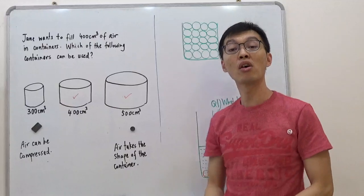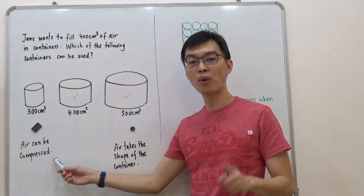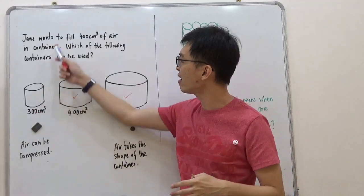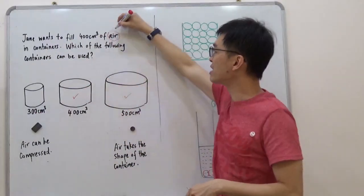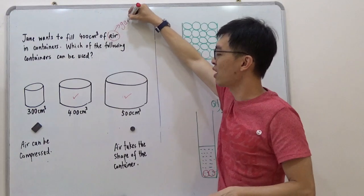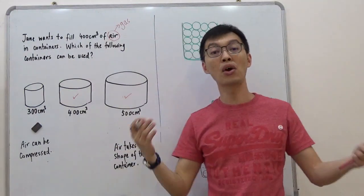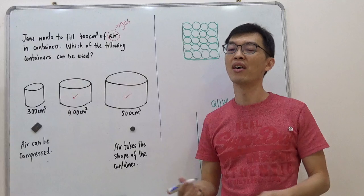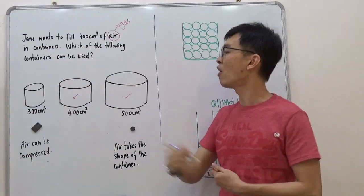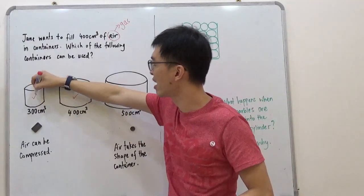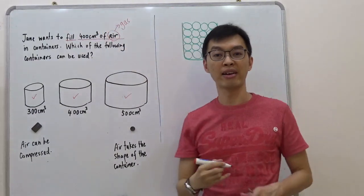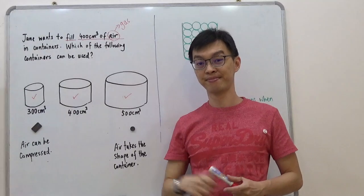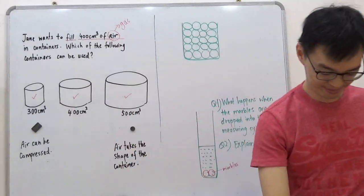Air can be compressed. This is one of the properties of gas. Air... what is that? Air is a gas, right? It is a gas. Then of course, we learned that air can be compressed. That was why all three containers can hold 400 cm³ of air. Have you gotten it?